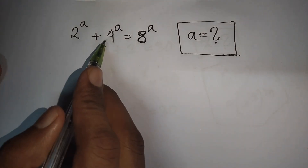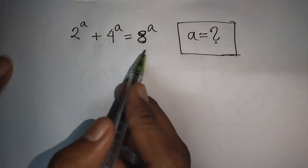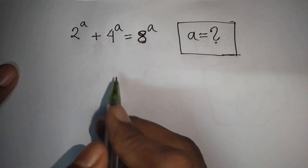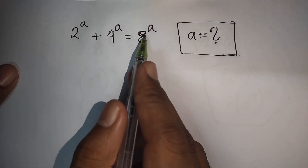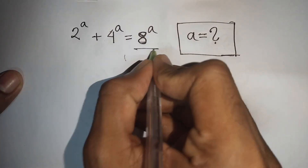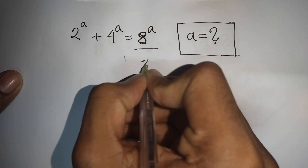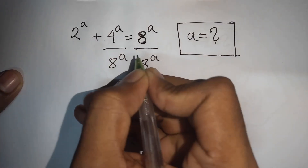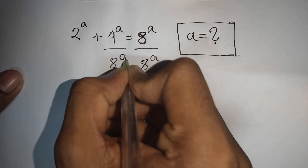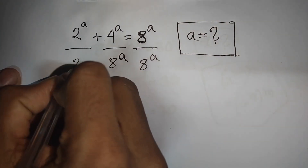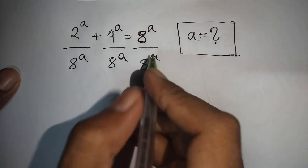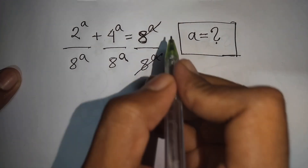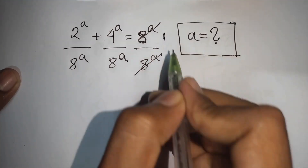Given: 2 power a plus 4 power a is equal to 8 power a. Find the value of a. First, we divide both sides by 8 power a, so divided by 8 power a on both sides. The 8 power a on the right side will cancel.